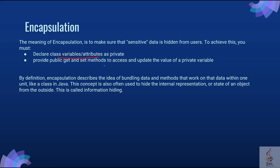Provide public get and set methods to access and update the value of private variables. By definition, encapsulation describes the idea of bundling data and methods that work on the data within one unit, like a class in Java. This concept is also often used to hide the internal representation or state of an object from the outside. This is called information hiding.